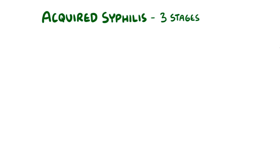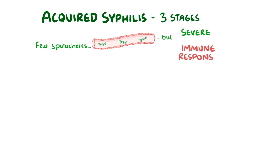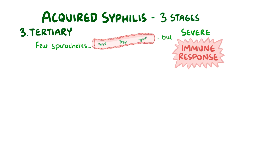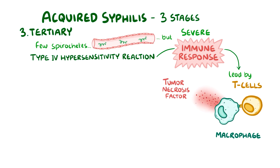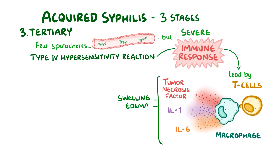As it turns out, only a few spirochetes are actually found in the capillaries of tissues and organs. But there's a severe immune response, so severe that it causes tremendous damage to the cells there, and that triggers the next phase, which is tertiary syphilis. In tertiary syphilis, there's a type 4 hypersensitivity reaction, meaning there's an immune response mainly led by T cells, which recruit phagocytes like macrophages and cause the release of pro-inflammatory cytokines such as tumor necrosis factor, IL-1, and IL-6. All of this leads to local swelling or edema, redness, and warmth, as well as systemic symptoms like a fever.